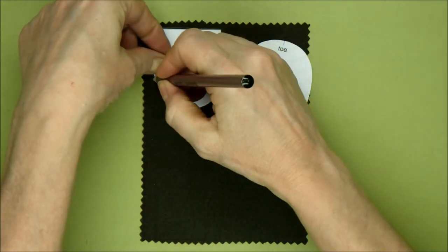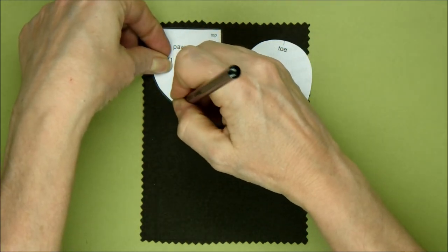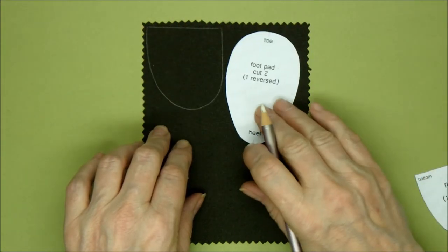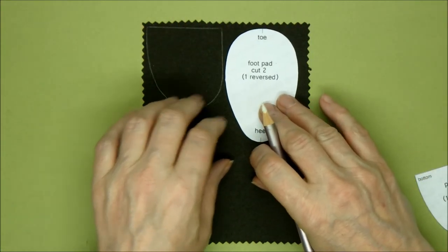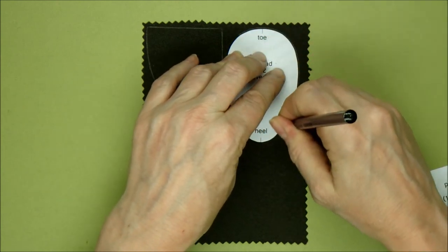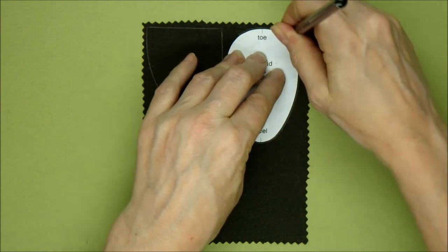Now, this is the foot pad. That was the paw pad. This is the foot pad. And on the foot pad, once you've drawn around it, you'll notice that we have two little markers.